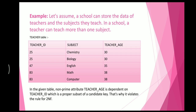Example: assume a school stores data of teachers and the subjects they teach. A teacher can teach more than one subject, so the table consists of teacher details and the subjects they teach. Teacher ID 25 appears twice because she teaches two subjects — Chemistry and Biology — and her age is 30. Teacher ID 83 teaches two subjects — Maths and Computer — and her age is 38. The non-prime attribute 'Teacher Age' depends on Teacher ID, which is a proper subset of the candidate key. That is why it violates the rule of 2NF.